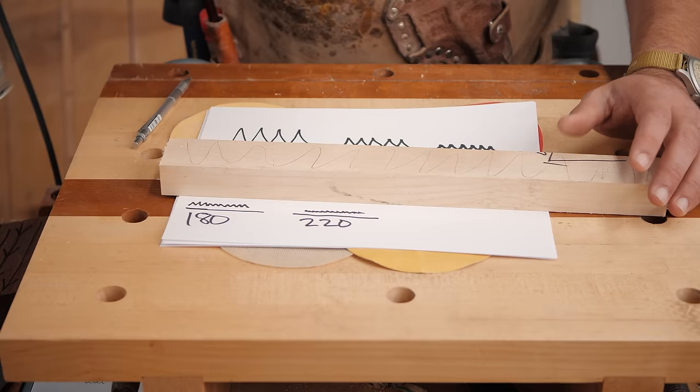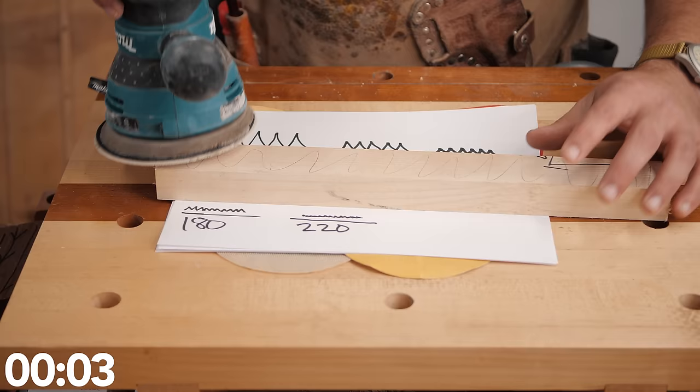So I use a 0.5 pencil and I just put pencil on my piece. And when you sand, you want to go about an inch a second. So I count in my head, I go one, one thousand, two, one thousand, three, one thousand.